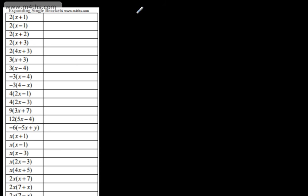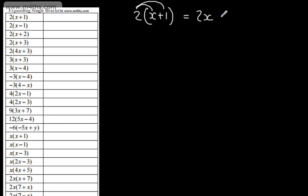So this one right here, we've got 2, and then we have the quantity x plus 1. So all I'm going to do is 2 times x, and then 2 times 1, and we can go ahead and add those. 2 times by x is 2x, 2 times by 1 is 2, and we would add that. It's important to stress at this point that 2 times by x is 2x and not x squared. x multiplied by x is x squared, and we need to avoid that error.